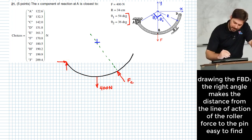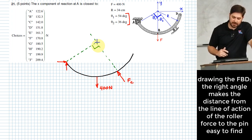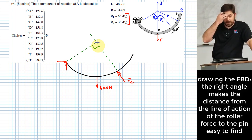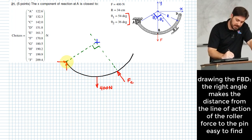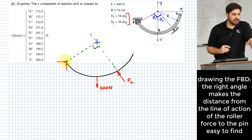And I'm going to show you here that since that line of action of F sub C is perpendicular to this line right here, it means finding the distance from the line of action of F C to the pin is pretty easy. What is it?